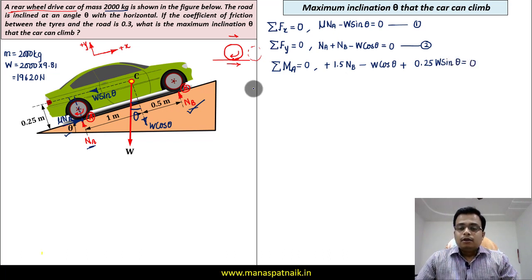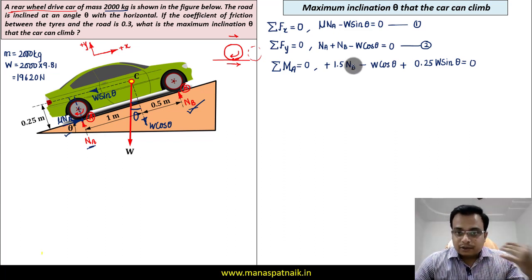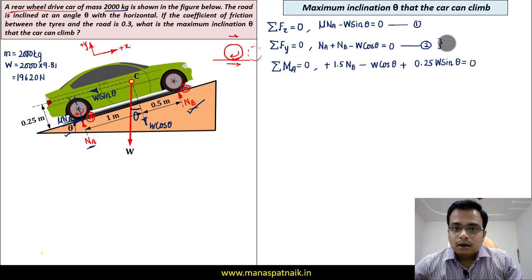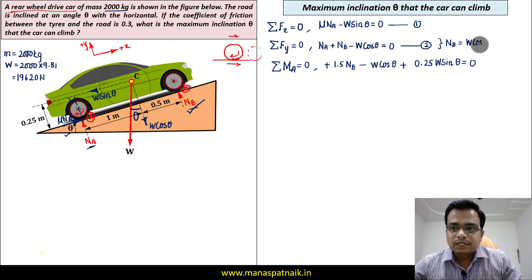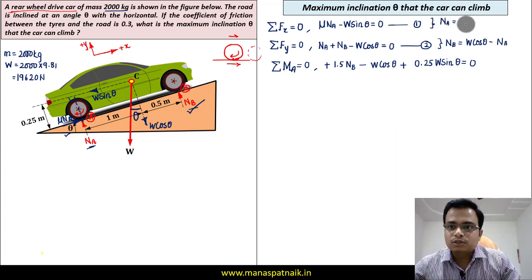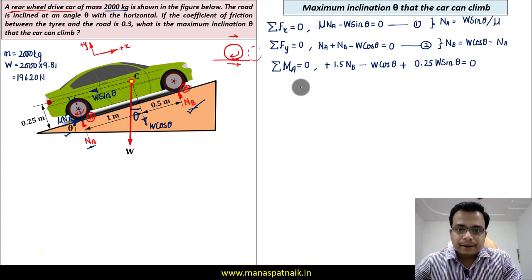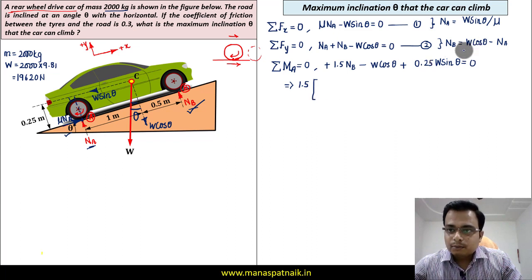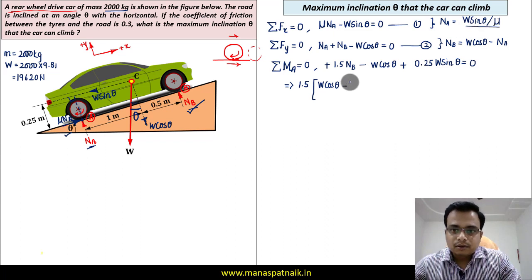The complete moment equation is: 1.5 NB − W cos theta + 0.25 W sin theta = 0. To simplify, from equation two we can write NB = W cos theta − NA, and from equation one, NA = W sin theta / mu. Substituting, the equation becomes: 1.5(W cos theta − W sin theta / mu) − W cos theta + 0.25 W sin theta = 0.